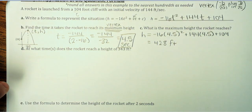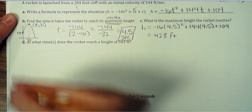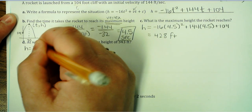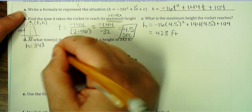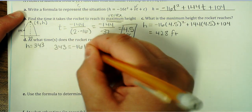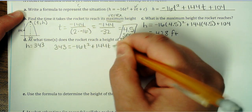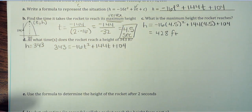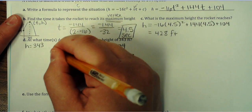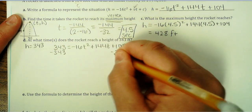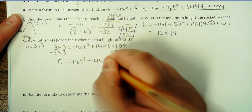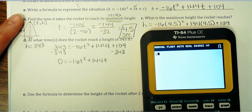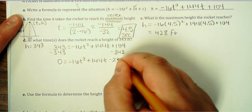At what time does the rocket reach a height of 343 feet? They're telling you the height, and this is where we're going to apply solving a quadratic with the quadratic formula. So I'm just going to take my formula: 343 equals negative 16t squared plus 144t plus 104. Now, to solve this quadratic equation, you want to set it equal to zero. The first two terms stay the same, and on the end we do 104 minus 343, which gives us negative 239.